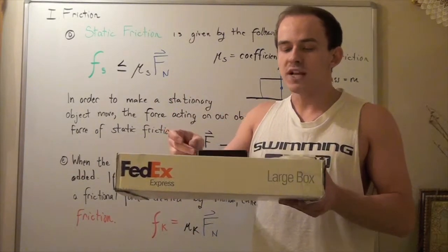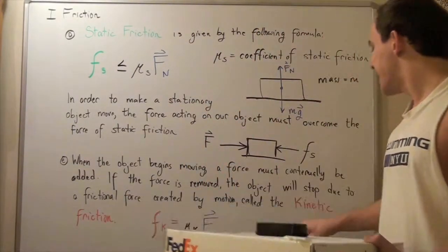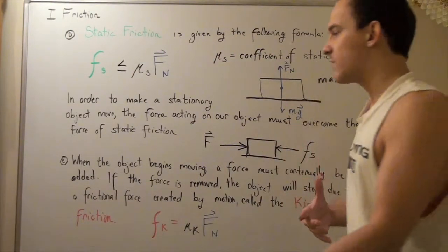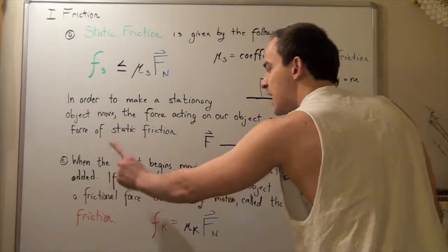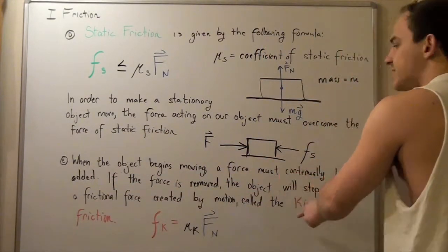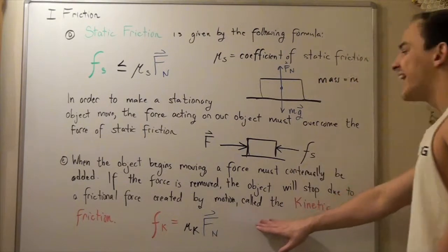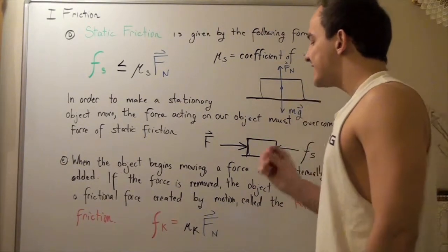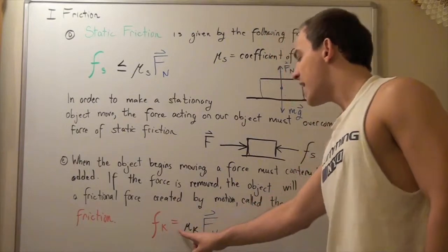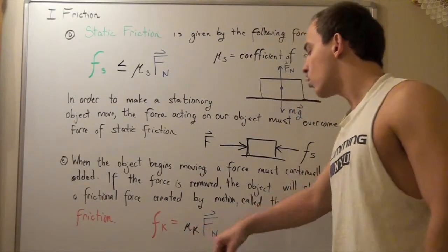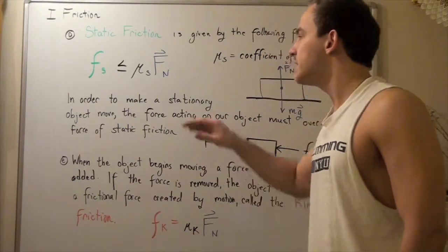That means when the object is moving, there is another frictional force acting on it, known as kinetic friction. Kinetic simply means movement of the object. When the object begins moving, a force must continually be applied; if the force is removed, the object will stop due to kinetic friction. Kinetic friction is given by the formula: F_k equals mu_k — the coefficient of kinetic friction — multiplied by the normal force. The maximum static friction is always greater than the kinetic friction.